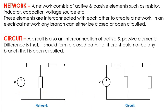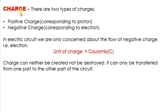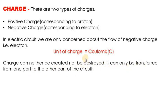From this we can state: every circuit is a network, but not every network is a circuit. Moving to the next definition — charge. There are two types of charges: positive charge corresponding to the proton, and negative charge corresponding to the electron. In network theory and electric circuits we are only concerned about the negative charge, i.e., the electron. The unit of charge is coulomb, and charge can neither be created nor destroyed — it can only be transferred from one part of the circuit to another.